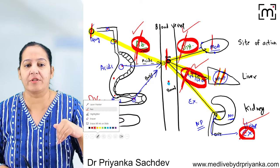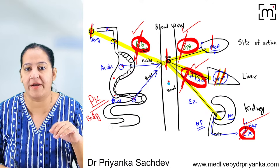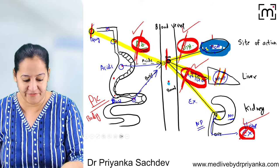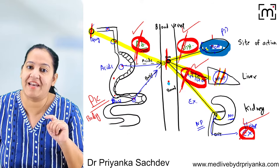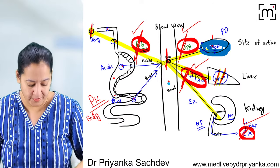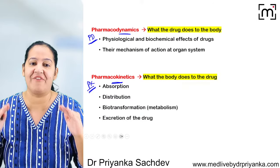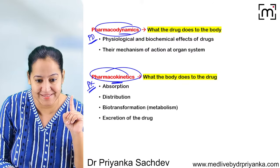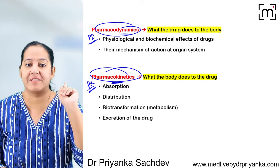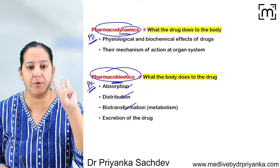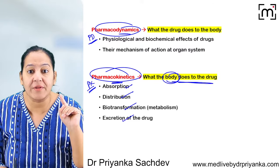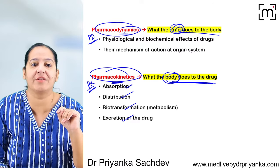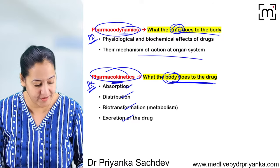Now, what the drug does to the body — that is pharmacodynamics. The drug does only one thing: showing its mechanism of action at the site of action. So we have two branches in pharmacology: pharmacokinetics (what the body does to the drug) and pharmacodynamics (what the drug does to the body).